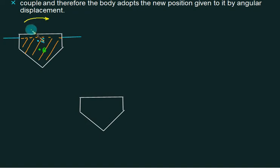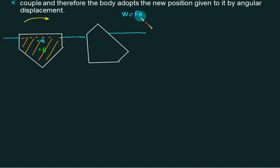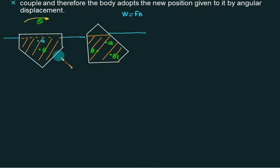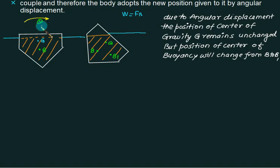Now we give an angular displacement to the ship. The ship turns but is still in floating condition, so W is still equal to FB. The original center of gravity G does not change. However, the cross section of the volume displaced has changed, so we get a new center of buoyancy B1. Due to angular displacement, G remains unchanged but the center of buoyancy shifts from B to B1.